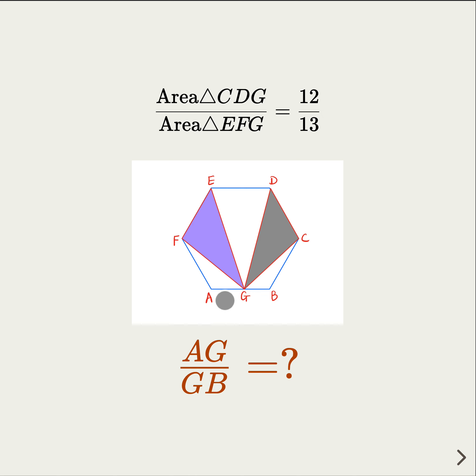In this problem, we are given a regular hexagon here, and we have G so that the shaded area has a ratio of 12 over 13. We try to find the line segment ratio AG over GB.